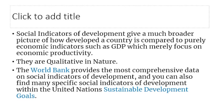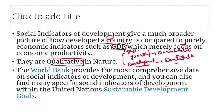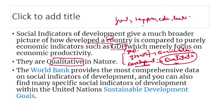Social indicators of development give a broader picture of how developed countries are compared to purely economic indicators like GDP and GNP, which are considered quantitatively. When you talk about development, it is qualitative — what change has come in the quality of life. GDP only tells us about economic welfare and national income increase, which is quantitative growth. Social development indicators like freedom, happiness, education, health, and gender inequality determine quality of life — so these are called qualitative changes.